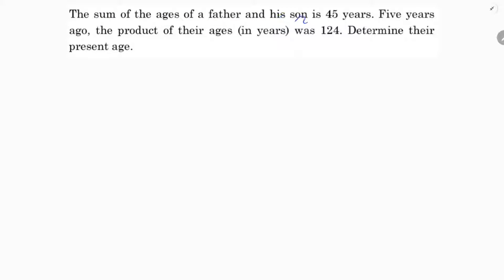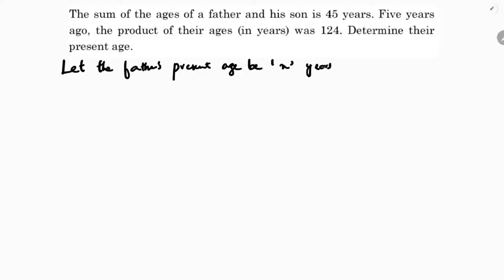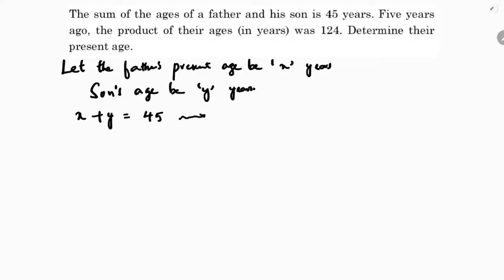The sum of the ages of a father and his son is 45 years. Five years ago, the product of their ages in years was 124. Determine their present ages. Let the father's present age be x years and the son's age be y years. So the first equation is x plus y equals 45.